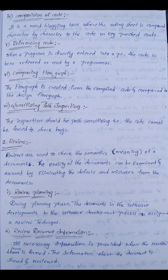The meaning of a document is checked through reviews. Reviews are used in the quality system documentation to find semantic bugs — the meaning of bugs. The quality of documents can be examined and assured by eliminating defects and mistakes from the documents.